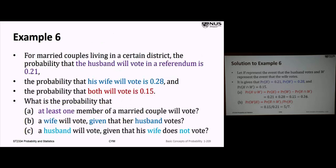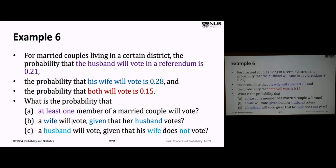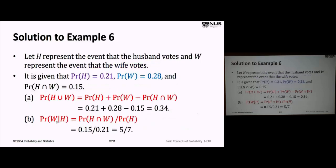Part B: the probability the wife will vote given the husband votes — P(W|H). That's P(H and W) over P(H) = 0.15 over 0.21 = 5 over 7.